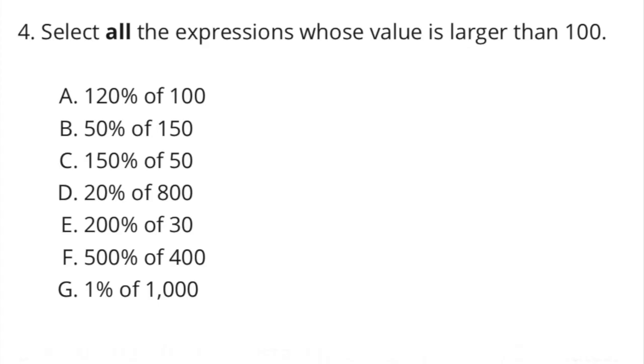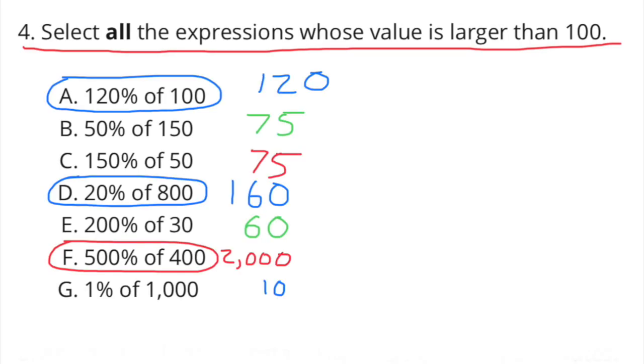Number 4: Select all the expressions whose value is larger than 100. A: 120% of 100 equals 120, so that would be over 100. D: 20% of 800 equals 160, so that would be greater than 100. And F: 500% of 400 equals 2000, and that's greater than 100.